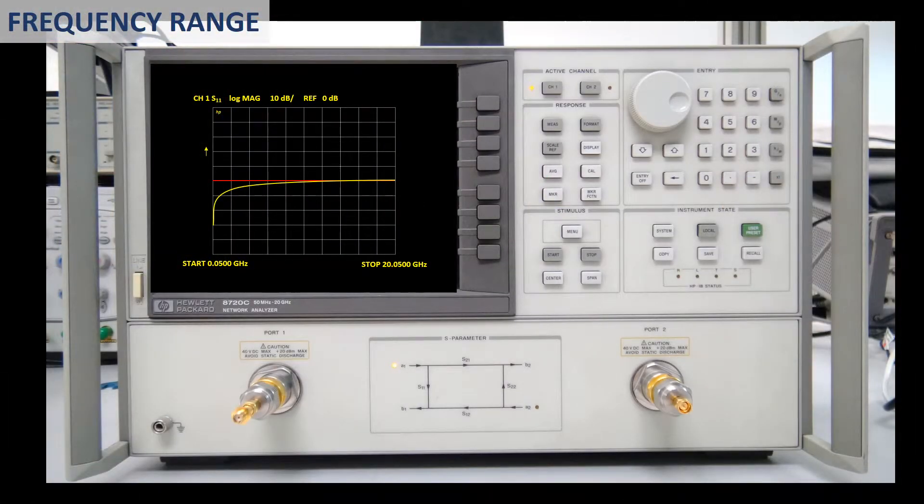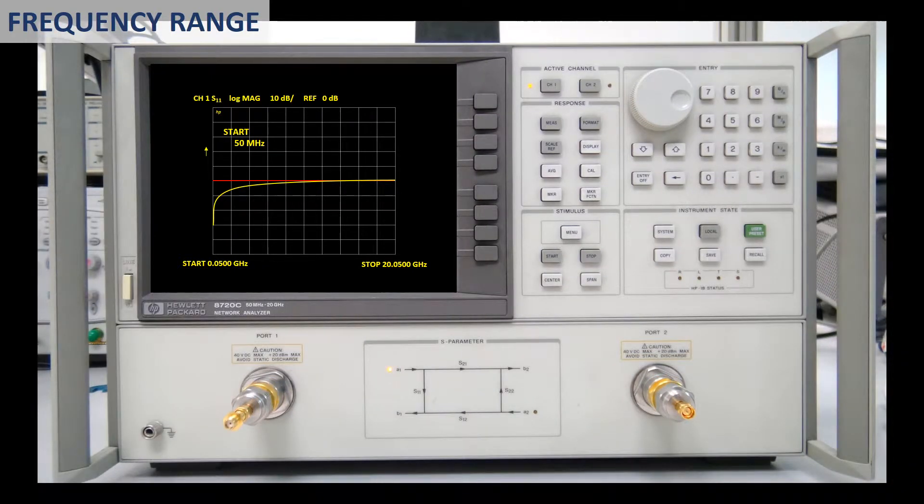Now we specify the frequency range. You can use either the panel Start-Stop keys or the Center Span keys. We will use Start-Stop. Let us choose a start frequency of 50 MHz. Since this is the default one, we will just check it by pressing Start. We want to measure up to 8 GHz. We press Stop, and then 8, and then the units, this time is GHz.